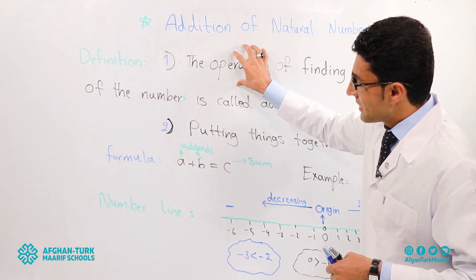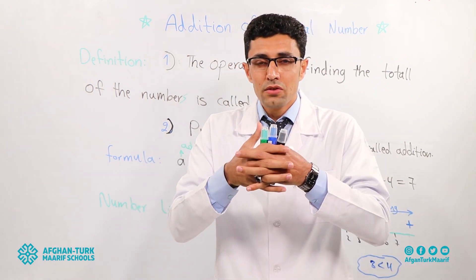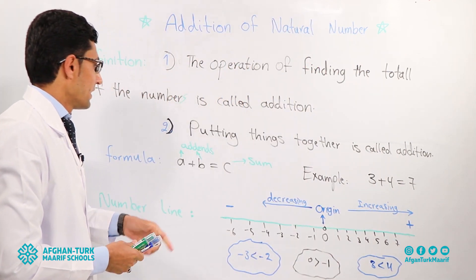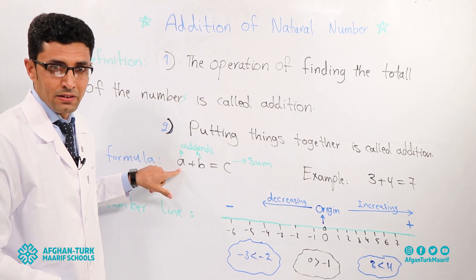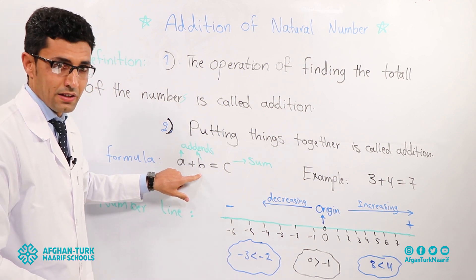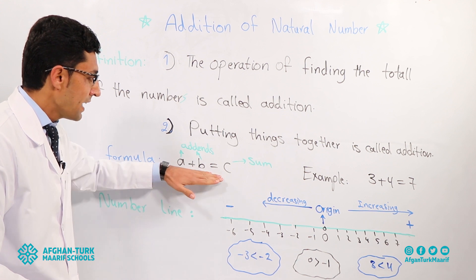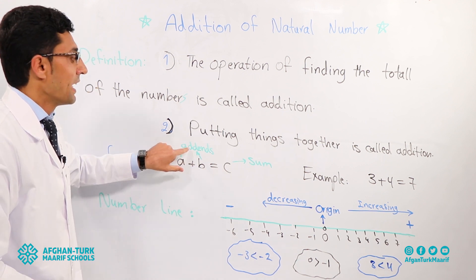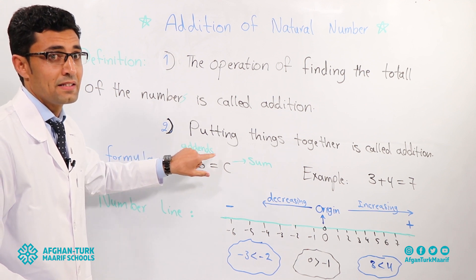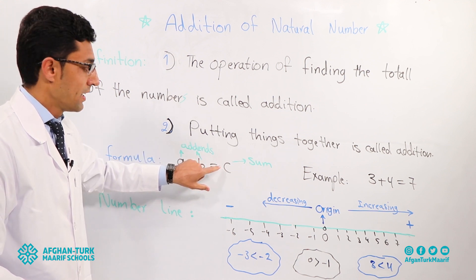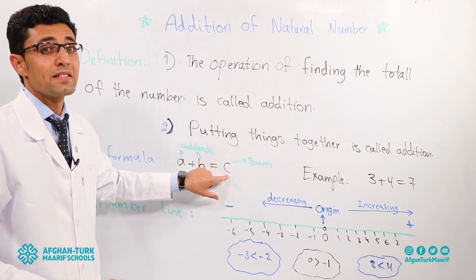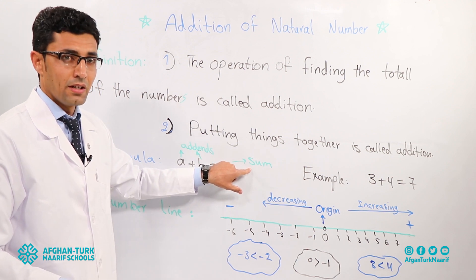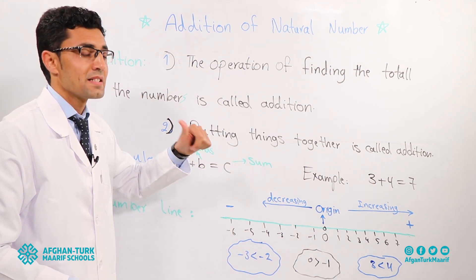It means that we are going to put things together. Let a be a number and b be a number. We are going to find the addition of them. What do we call a and b? Addends. What is the answer, c? What do we call c? Sum.